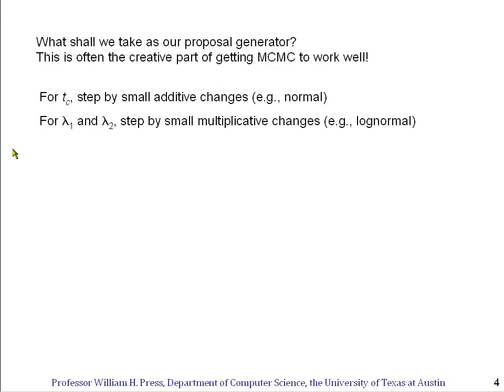To do Markov chain Monte Carlo we need a proposal generator, and this is often the creative part of getting MCMC to work well. If the proposal generator explores the space very inefficiently, in principle it might be ergodic, but in practice it might take the age of the universe to fill the space. For T_C, the critical time, we don't need to be clever — we can just take a small additive change drawn from a normal distribution, just as in the previous example.